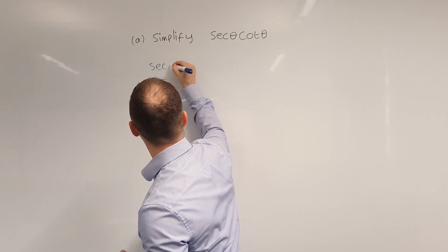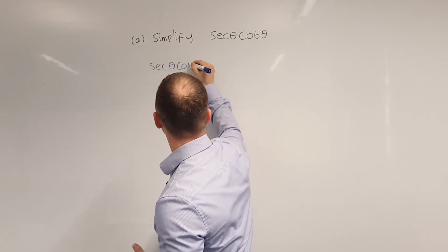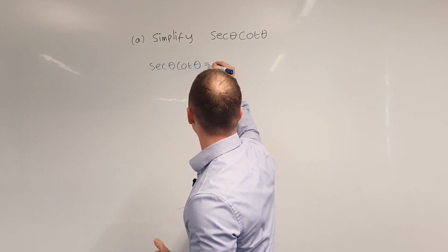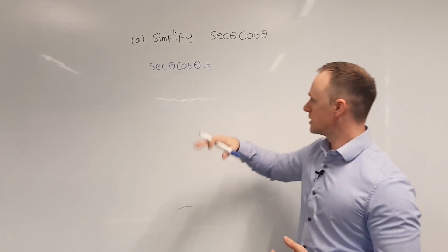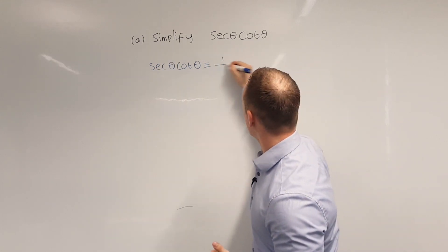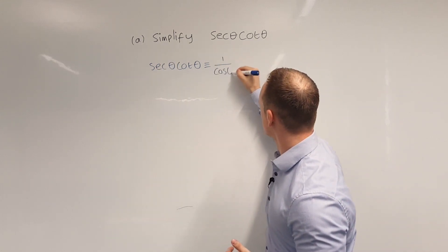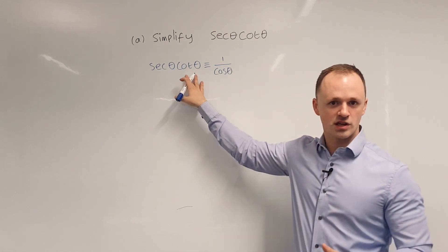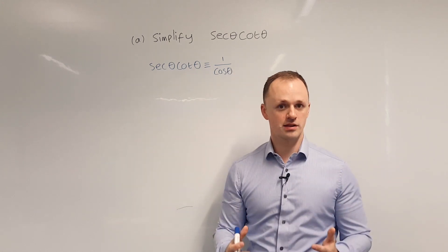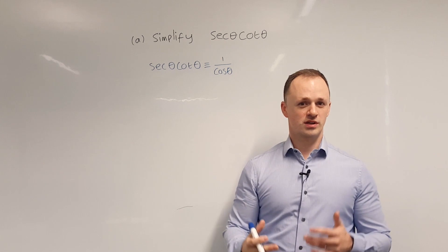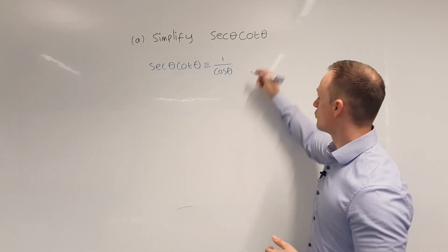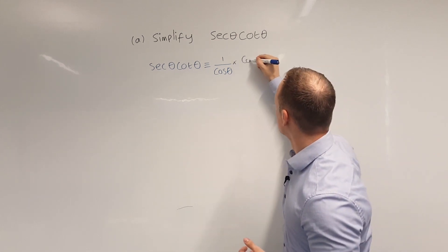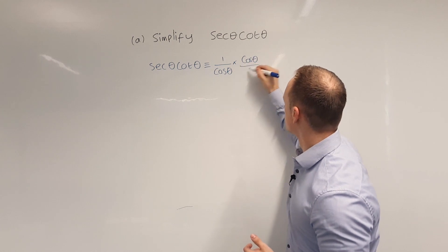So we have sec theta cot theta can be written as sec theta can be written as 1 over cos theta and cot theta, although we can write it as 1 over tan theta, a more useful identity in this case is to write it as cos theta over sin theta.